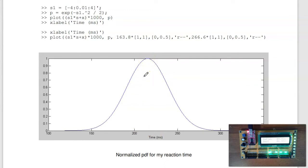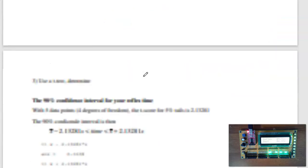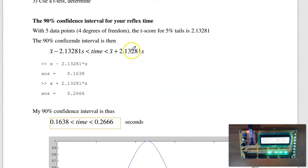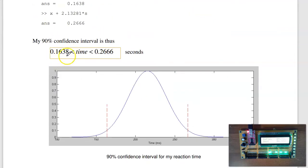If I want to find the 90% confidence interval, I've got a stat track. I've got five data points, meaning four degrees of freedom. Five percent tails, with four degrees of freedom. The t-score is 2.13. So we need to go left and right, 2.13 standard deviations. So that tells me the 90% confidence interval is between 163 and 266 milliseconds.